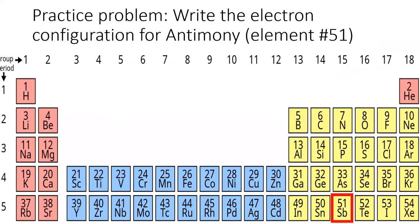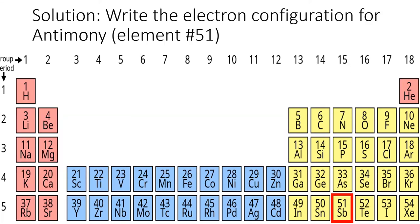Alright, time for a practice problem. Pause the video and write the electron configuration for a neutral antimony atom. Here's a solution. I find it easiest to use the periodic table to know which subshells I'm filling. I'll also use noble gas shorthand to save me some writing. The last noble gas before antimony was krypton, so I start with a Kr in brackets.